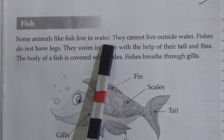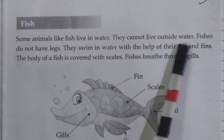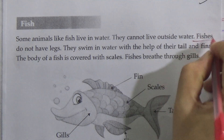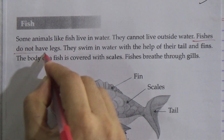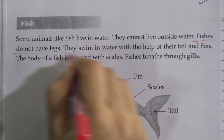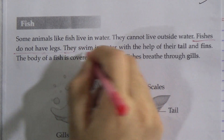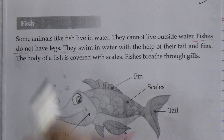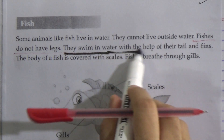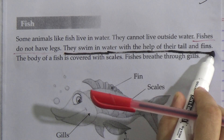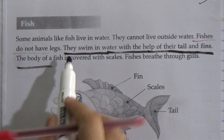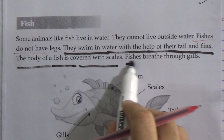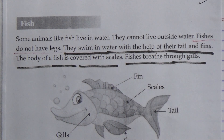Some animals like fish live in water — they cannot live outside water. Fishes do not have legs. My dear students, underline this line: fishes do not have legs. They swim in water with the help of their tail and fins. The body of a fish is covered with scales — underline this line also. Fishes breathe through gills.